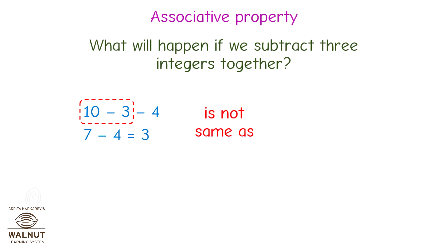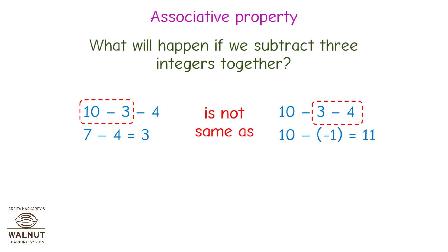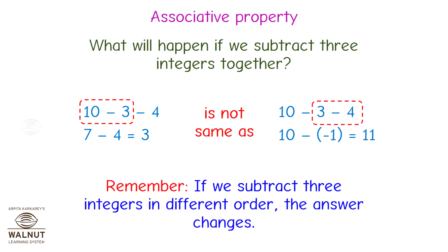Or, we can first do 3 minus 4, which is equal to minus 1, and then do 10 minus minus 1, which is equal to 11. So, you can see, if we subtract three integers in different order, the answer changes. So, the associativity does not hold in subtraction of integers.